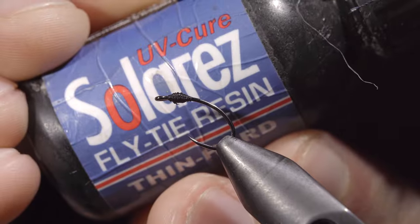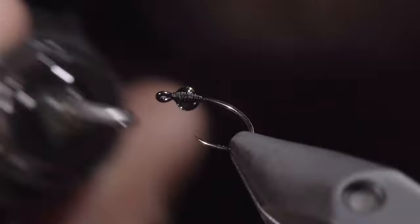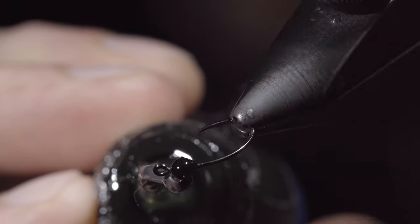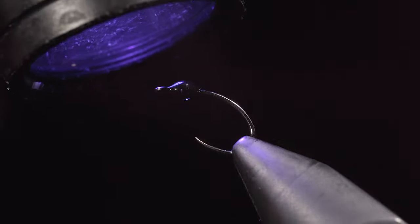We'll then grab some UV resin. This is my favorite, you can find it in the link below. We'll add a small drop of UV resin, spread it around our thread base, which gives it a nice black color, and once happy, fix with a UV light.